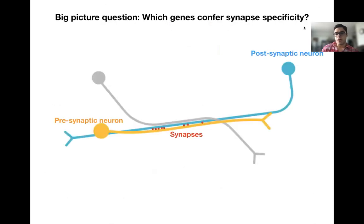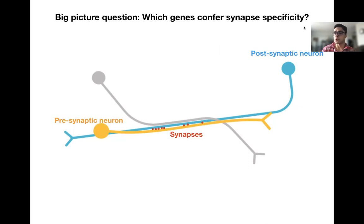We start by asking: which genes determine synaptic connectivity? We can afford to ask this question because we know that the proximity of neurons to each other is necessary but not sufficient, since only a fraction of neurons that are touching end up forming synapses. Therefore, synapses must be specifically placed where they are, and hence they must be genetically encoded. Our goal is to build a model to decipher the genetic codes that determine such connectivity.